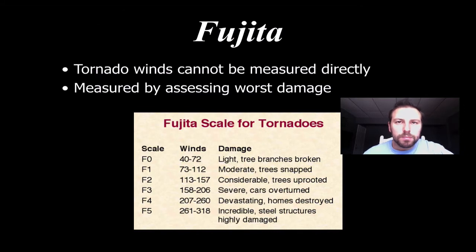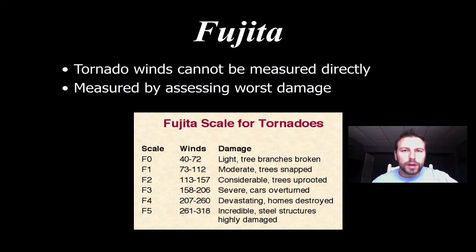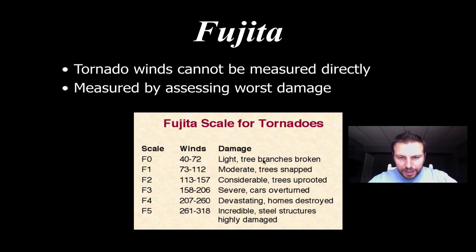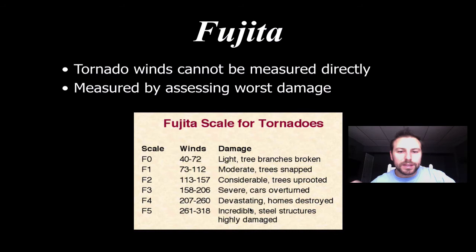What we use to measure and classify the strength of tornadoes is known as the Fujita scale. It works by assessing damage — how much damage the tornadoes cause. You can see everything from light tree branches broken at F0, all the way up to steel structures highly damaged at the top end. Based on the damage and the approximate wind speeds, we assign a scale rating.